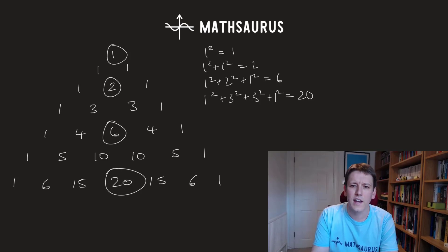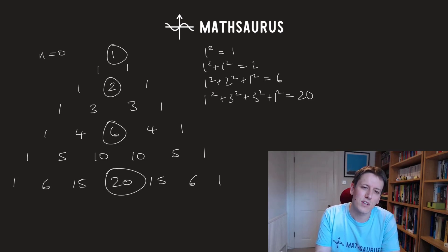So it looks like I keep getting these central entries in the 2nth row of Pascal's Triangle. Remember we start by calling the first row row 0 here. And so these are the even rows of Pascal's Triangle and they're the central elements.